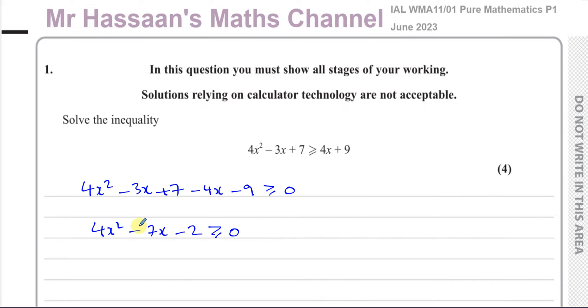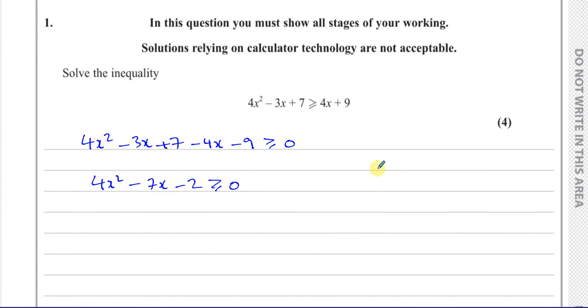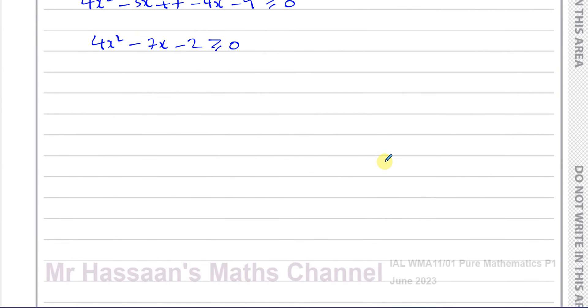So now this is going to make it easy for us to actually solve the inequality. This inequality is the same as that. We've just added or subtracted the same thing from both sides. Now to solve the quadratic inequality, what we need to do is first of all, find where it equals 0, and then we can decide where it's greater than or less than 0.